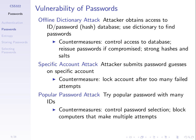In an offline attack, the attacker gets access to some password information and tries to guess in their own time. A specific account attack is an online attack where the attacker submits guesses to the system for a specific account — typing in a known username and guessing the password repeatedly until they get it. One way to stop that is once there have been a certain number of failed attempts on that specific account, lock the account and don't allow any more attempts.